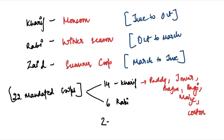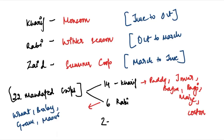The 6 Rabi crops for which MSP was mandated were wheat, barley, gram, masoor, mustard, and safflower. These are extremely important Kharif and Rabi crops in India.